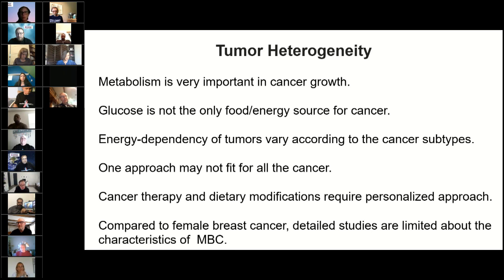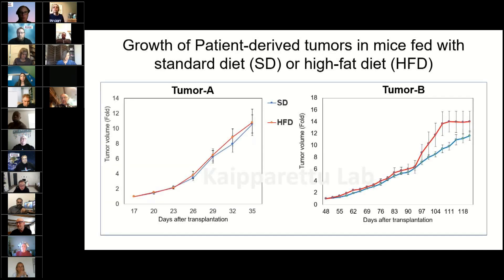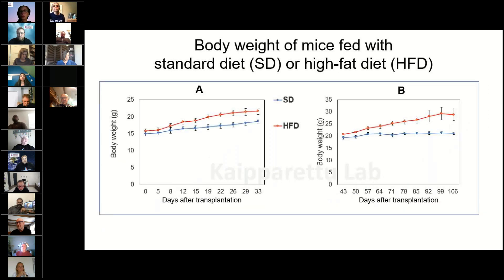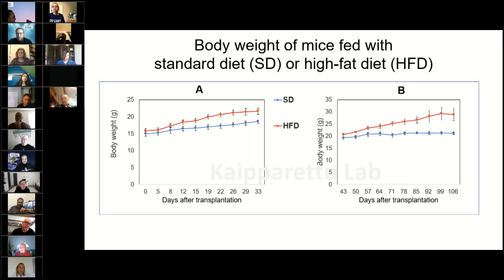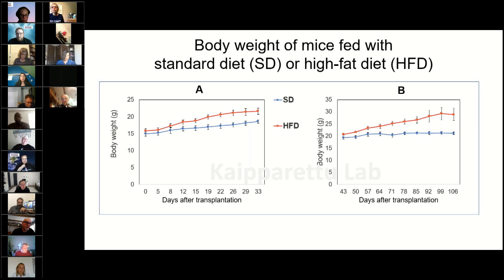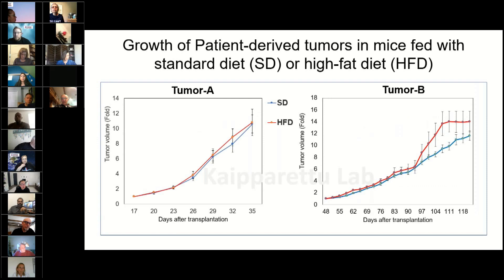What we did was take patient-derived tumors and use them in mouse models. One group of mice was treated with a high fat diet, and another with a low fat diet. Both groups used triple negative breast cancers. You can see that both mice got weight gain when treated with the high fat diet. Tumor A is one tumor type and Tumor B is another — and this is the tumor weight in the mouse.